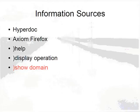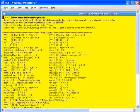Axiom arranges operations by domains. A domain is something like integers, complex numbers, or expressions. When using a domain, it is sometimes necessary to ask what operations it supports. The )show command will show you all of the operations that can be performed on elements of a domain. It also shows what file contains the source code, as well as other useful information such as the abbreviation of the domain.